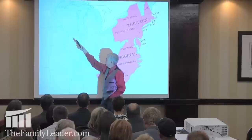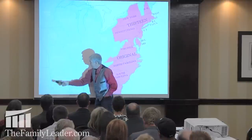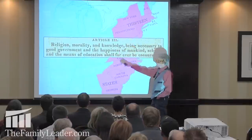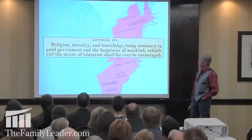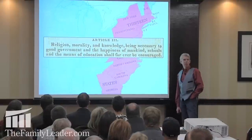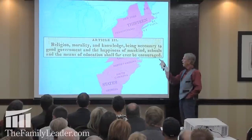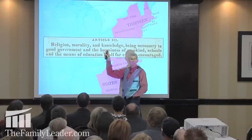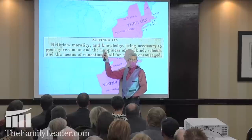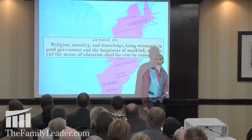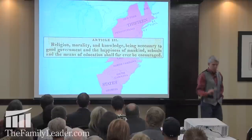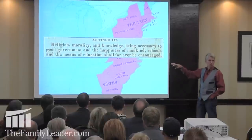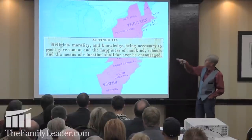Article 3 of the Northwest Ordinance said: 'Religion, morality, and knowledge being necessary to good government and the happiness of mankind, schools and means of education shall forever be encouraged.' Because we want good government and happiness of mankind, what we're going to do in schools is teach religion, morality, and knowledge. You could not be a state in the United States if that was not your philosophy of education. That's what we had for two centuries.